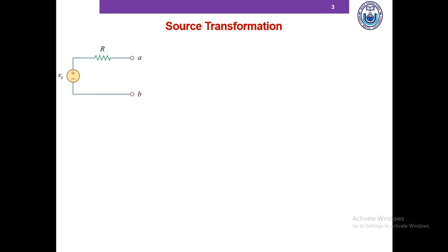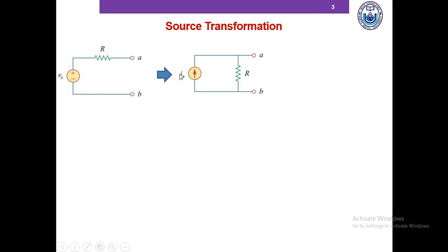To perform source transformation and convert voltage sources into current sources: a voltage source Vs with a resistor R in series can be replaced with a current source Is in parallel with the same resistor R. We need to determine the value of the current source Is, which is equal to Vs divided by R, where Vs is the value of the voltage source and R is the resistor in series with it.